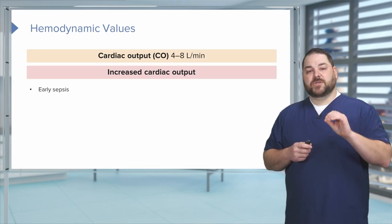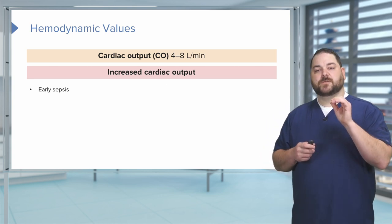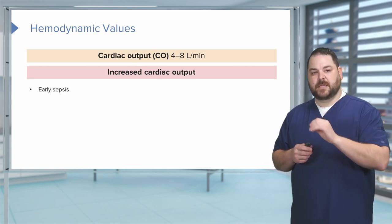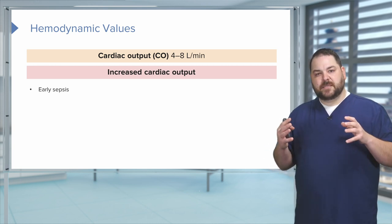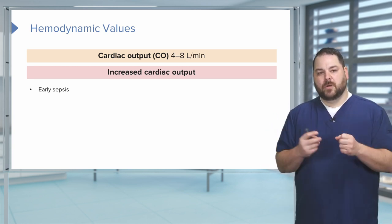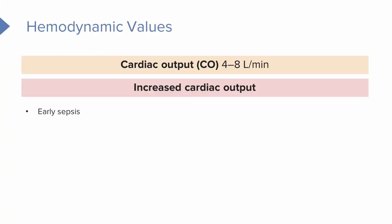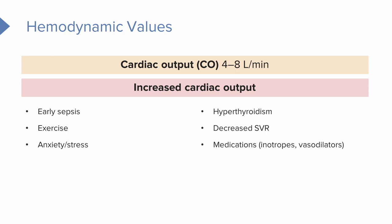What can increase your cardiac output? The early stages of sepsis, called the hyperdynamic stage — the body senses a decrease in blood pressure and compensates by increasing cardiac output. We can see a hyperdynamic left ventricle in this sense. Other things that cause increased cardiac output include exercise, anxiety and stress, hyperthyroidism, a really decreased SVR or very low afterload, and specific medications such as inotropes and vasodilators.